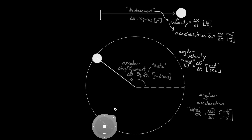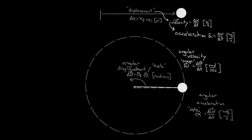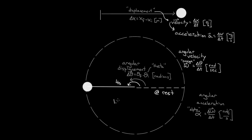Let's try a sample problem. Let's say the ball starts at rest over here and it rotates all the way to a point in four seconds. And when the ball makes it over to this side, it's going 1.57 radians per second — that's the final angular velocity. What would the angular displacement be? If the ball started here and made it over to here, the angular displacement would be pi radians or 180 degrees. The initial angular velocity was zero since it started at rest, and the final angular velocity is 1.57 radians per second.